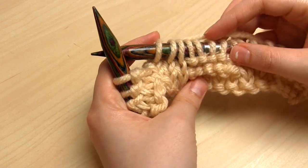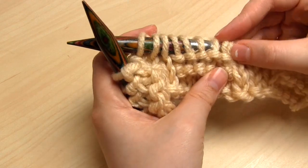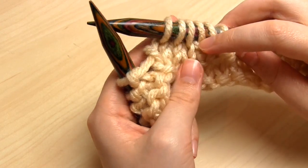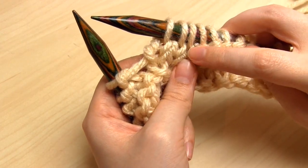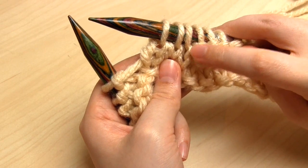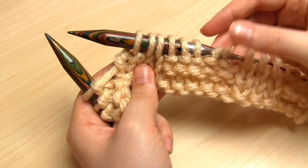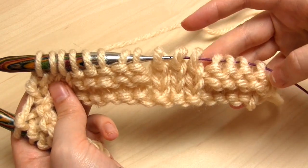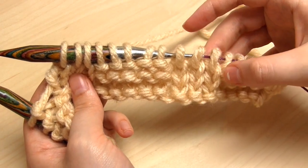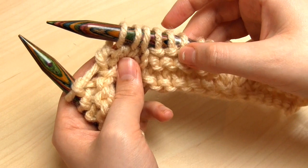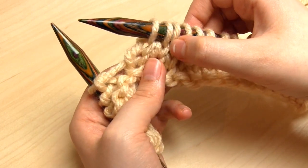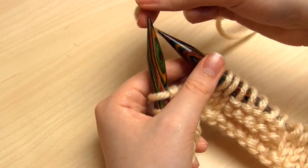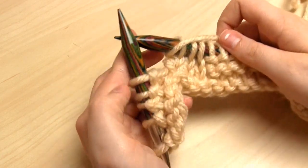By the way, if you ever lose count of how many knit or purl stitches you've done on a row, have a look at the front of your right hand needle. If there are bumps right next to the needle that are elevated, that's where you've done a purl stitch. If you don't have those bumps, then it's a knit stitch. So if you get 3 purl stitches into doing 5 purl stitches and you forget how many you've done, then you can just count the bumps along the right hand needle.